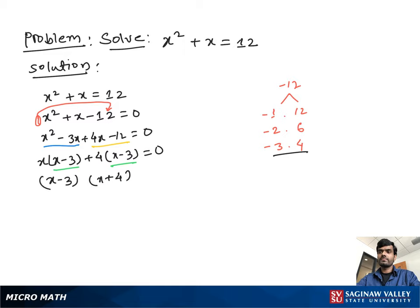Now multiplying these two terms gives us 0, so we set each term equal to 0. So we write x minus 3 equal to 0, or x plus 4 equal to 0.